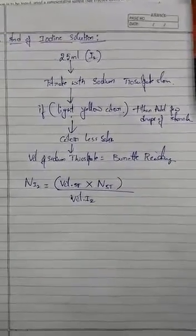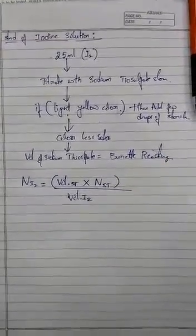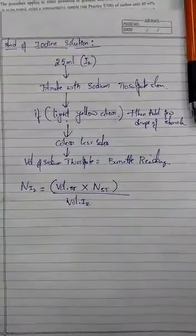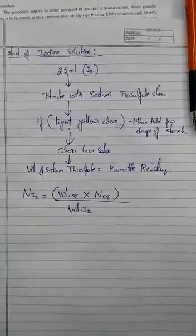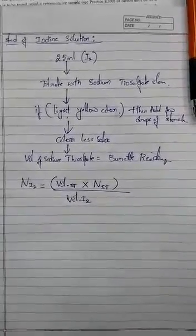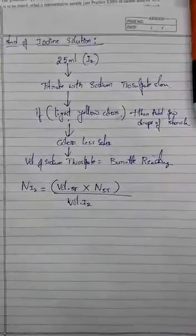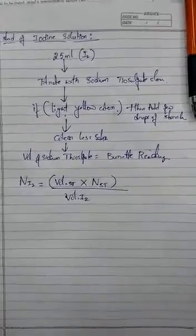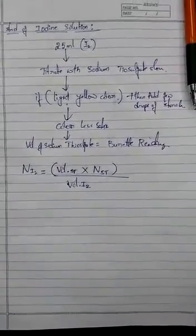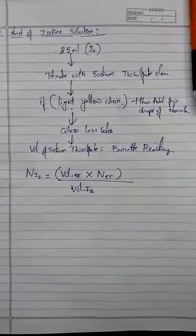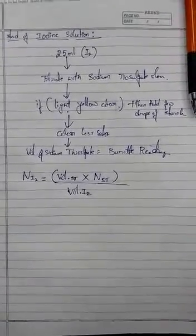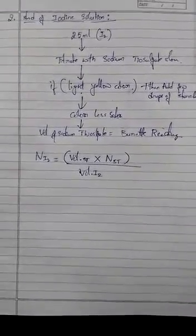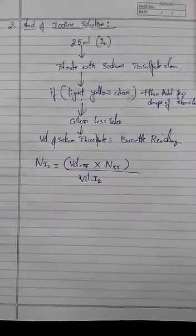Now we will start doing iodine solution standardization. It is a very simple procedure. Add 25 ml of iodine into the conical flask and titrate against sodium thiosulfate solution. Once the solution inside the conical flask turns light yellow color, then add few drops of starch, then do the titration again till the solution becomes colorless. The volume of sodium thiosulfate is equal to the burette reading we get.